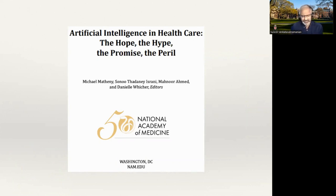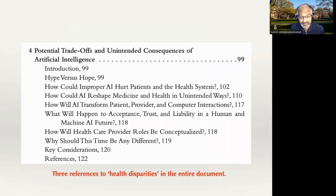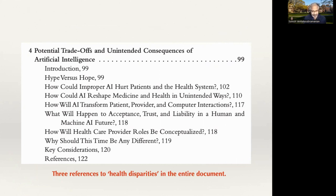I wanted to jump straight to the section where they talked about the concerns and issues around AI. There is a very broad and detailed section on that. One thing I was disappointed by, though, was that there were exactly three references to health disparities in the entire document, of which one was in the bio of one of the contributors. So even though there was a whole section on the trade-offs and unintended consequences of artificial intelligence, there was very little that was actually talking about health disparities. This was 2019, so a few years ago, but I think it points to the fact that there's still a lot that we can be doing to think more about health disparities.